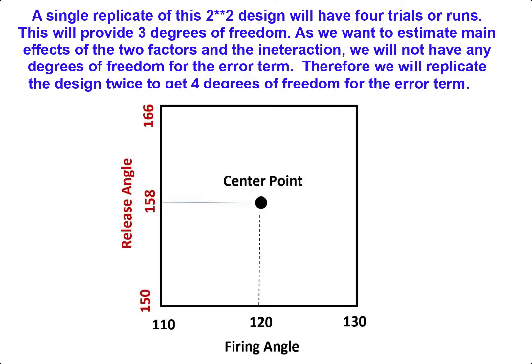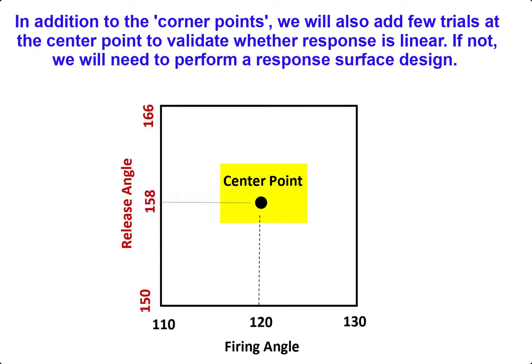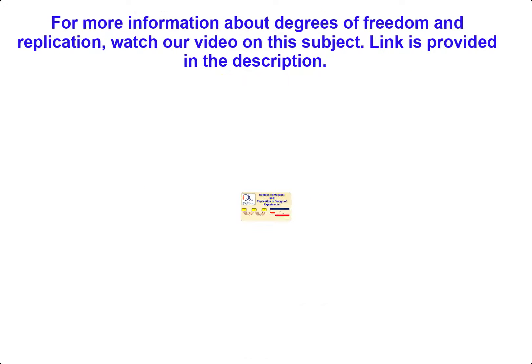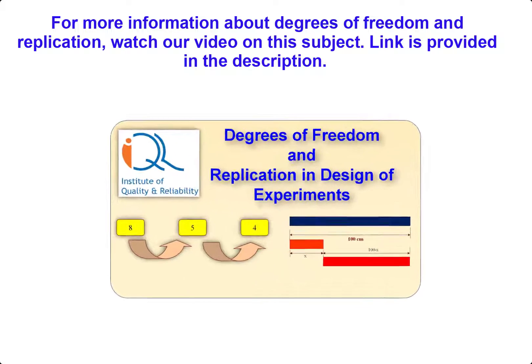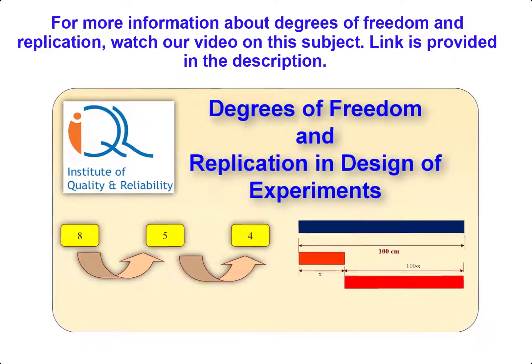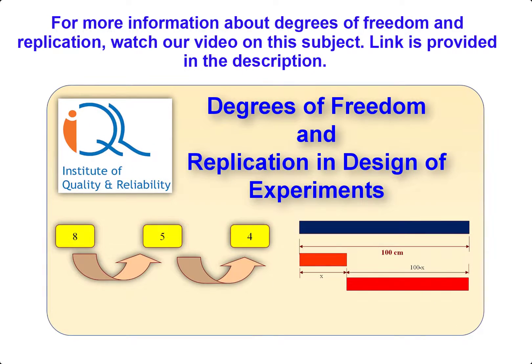See tables below for clarification. In addition to the corner points, we will also add few trials at the center point to validate whether response is linear. If not, we will need to perform a response surface design. For more information about degrees of freedom and replication in design of experiment, watch our video on this subject. Link is provided in the description of this video.